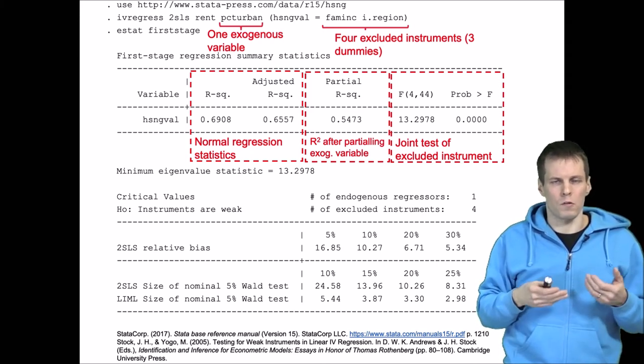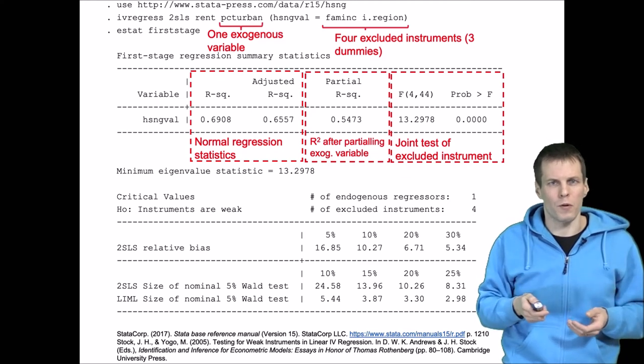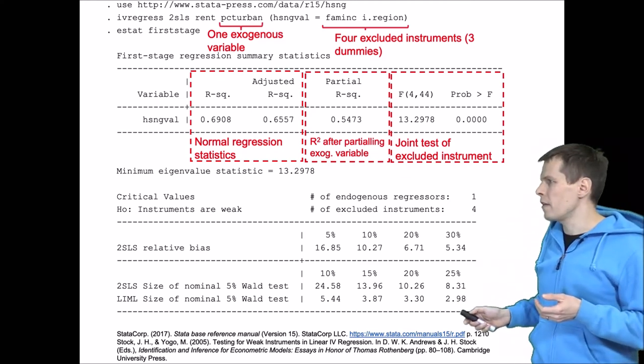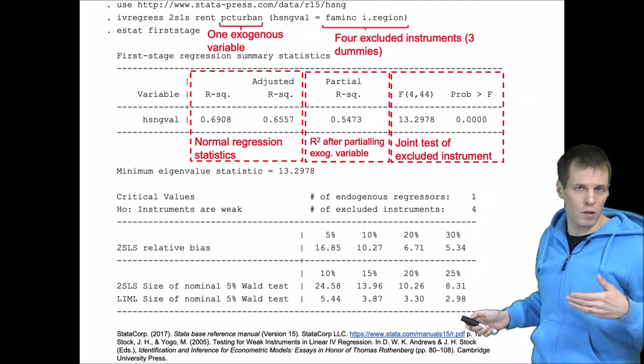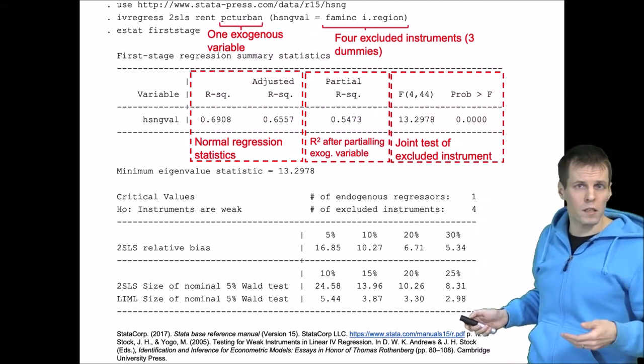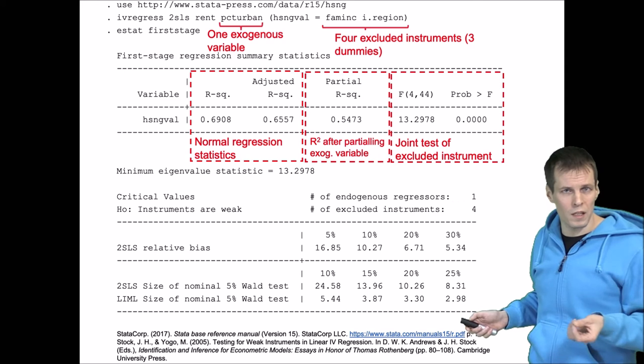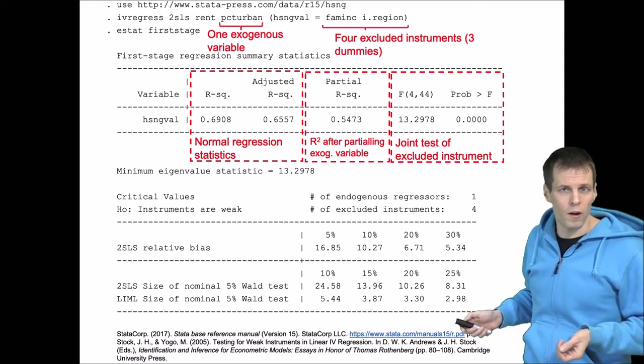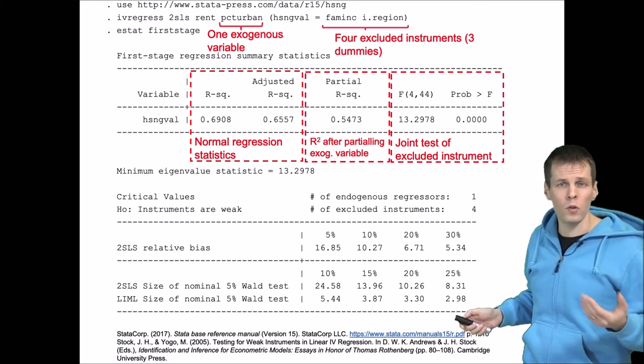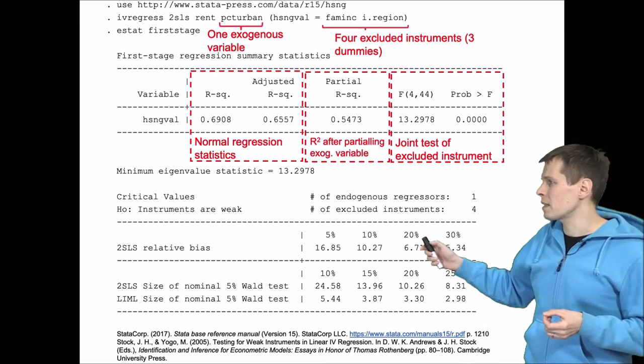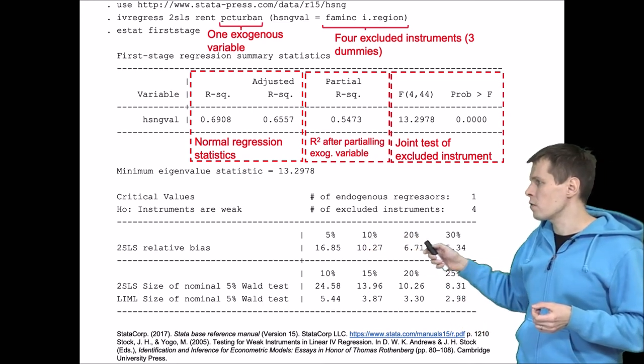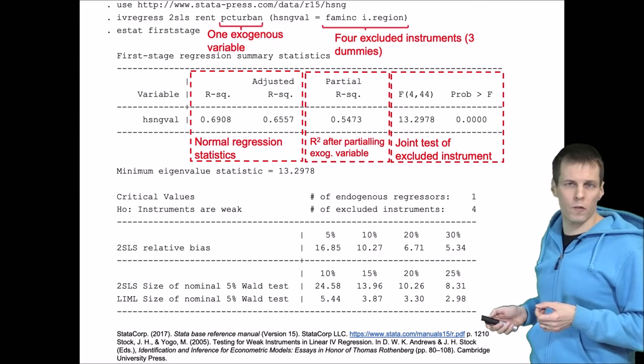One of the most commonly cited articles in this context is the paper by Stock and Yogo here. And they present this kind of calculations. The article contains lots of reference tables that they calculated for the F statistic here. So they calculate what is the expected bias of two-stage least squares as a function of the F statistic.